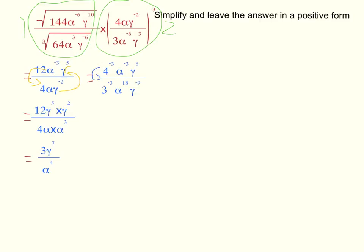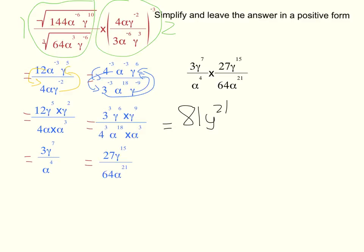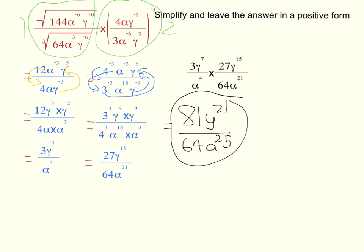So 4 to the power of negative 3 goes to the bottom, a to the power of negative 3 goes to the bottom, 3 to the power of negative 3 goes up, and y to the power of negative 9 goes up. After making all the negative indices positive, solve and simplify the numerator and denominator. Now that's the simplest form, so we add both parts together — times the numerators and times the denominators. Your answer should be 81 y to the power of 21 over 64 a to the power of 25. This is our answer since it is in positive form and the simplest form.